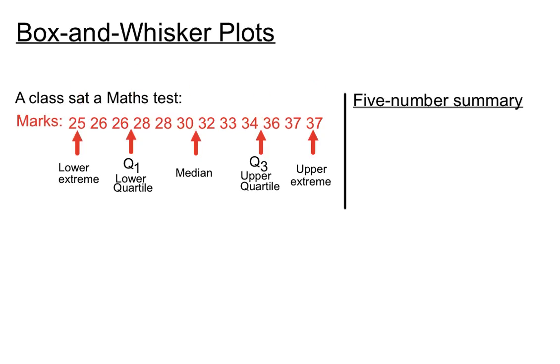We can compile a five figure summary of those five digits. 25 is our lower extreme. 27 was our lower quartile, halfway between 26 and 28. Our median was halfway between 30 and 32, or 31 in this case. Our upper quartile was 35, halfway between 34 and 36. And our upper extreme was 37. Those five numbers make up a five number summary or five figure summary.